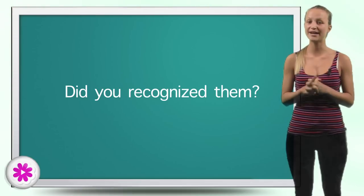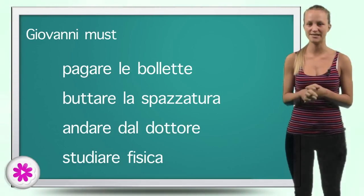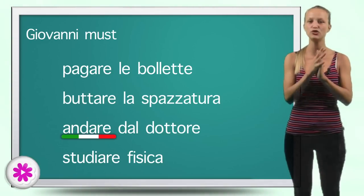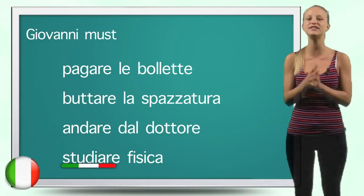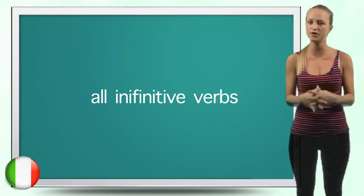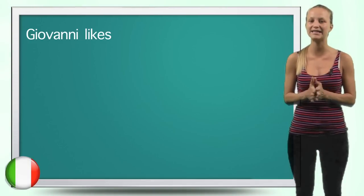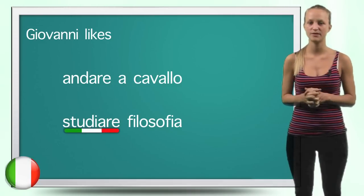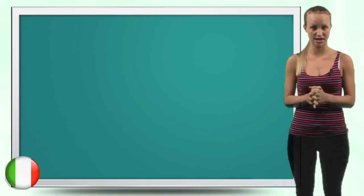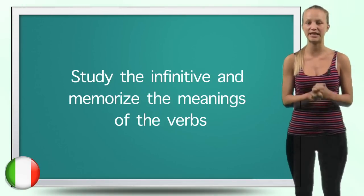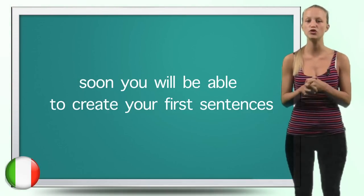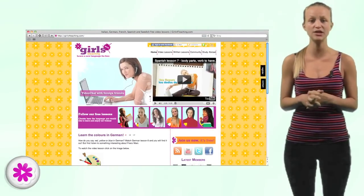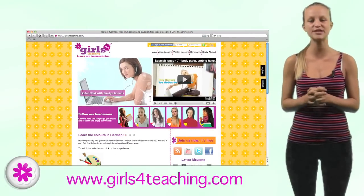Did you recognize them? Very well. Giovanni must pagare le bollette, buttare la spazzatura, andare dal dottore e studiare fisica — all infinitive verbs. He also likes andare a cavallo and studiare filosofia. So I think for today it's enough. Study the infinitive and memorize the meanings of the verbs. Soon you will be able to create your own sentences. You can also read the corresponding written lesson on the website, girlsforteaching.com.